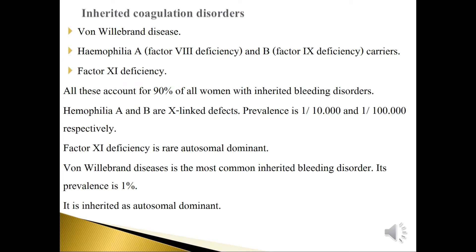Inherited coagulation disorders include Haemophilia A and B carriers, and Factor 11 deficiency. These account for 90% of all women with inherited bleeding disorders. Von Willebrand disease is the most common inherited bleeding disorder, with a prevalence of 1%.